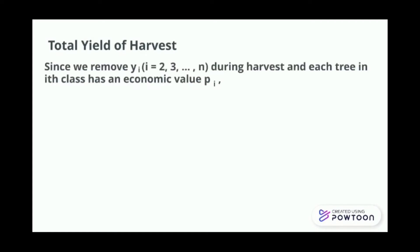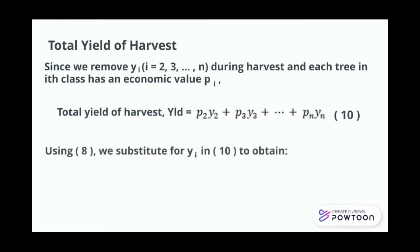Total Yield of Harvest. Since we remove yi, i equals to 2, 3 until n, during the harvest, and each tree in i class has an economic value pi, total yield of harvest equals to p2 y2 plus p3 y3, plus until pn yn. Using equation 8, we may substitute for yi in equation 10 to obtain. We label this as equation 11.